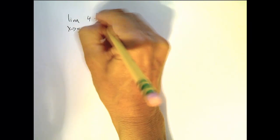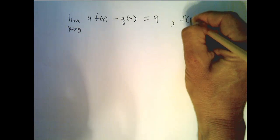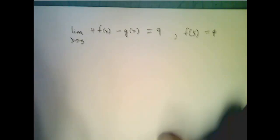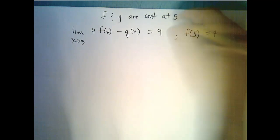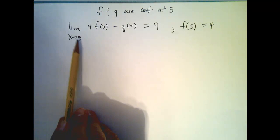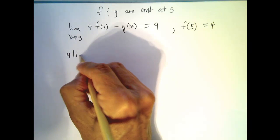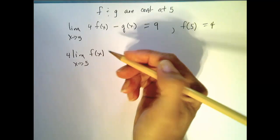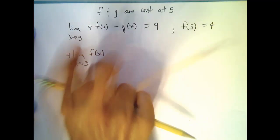Let's look at one more example using our properties to answer a question about continuity. Here's the limit as x approaches 5 of 4 times f of x minus g of x equals 9. I'm given that f of 5 equals 4, and that f and g are continuous functions at 5. Using the properties of continuity, I know I can split these up and pull out a constant — I know these limits exist because of continuity, and because they exist I can split them apart.